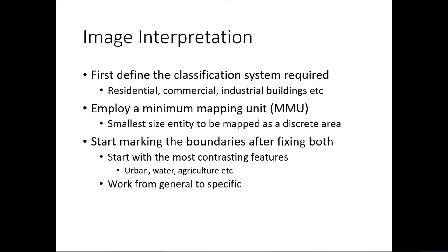How do you actually do image interpretation? First, you define the classification system required — for example, whether you want to classify a built-up area into residential, commercial, or industrial buildings; or classify a green area into deciduous forest, evergreen forest, grassland, paddy field, or orchard. If looking at a large area, you might classify it into built-up area, open area, vegetation, forest land, water bodies, etc.